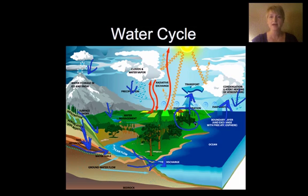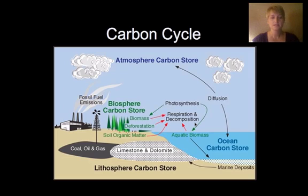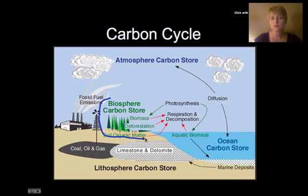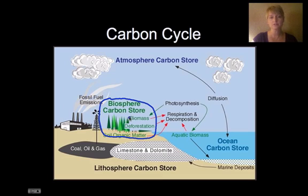The carbon cycle shows how carbon cycles throughout our environment. We have carbon in the atmosphere as gases. We have the biosphere carbon store, which means that every living thing on Earth — its major molecule is carbon-based — so we have this biomass that is made up of carbon, and that's a carbon storage.